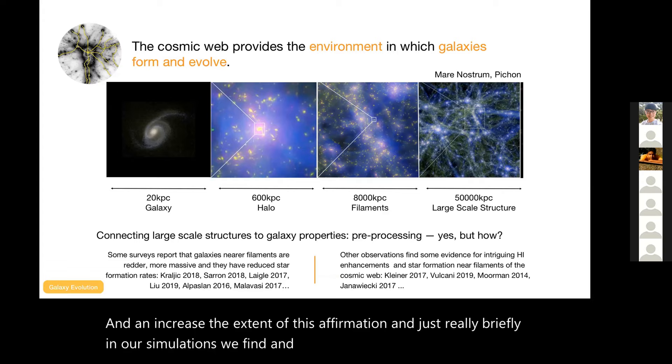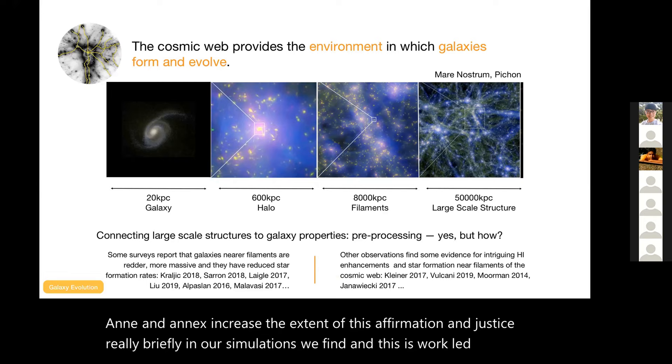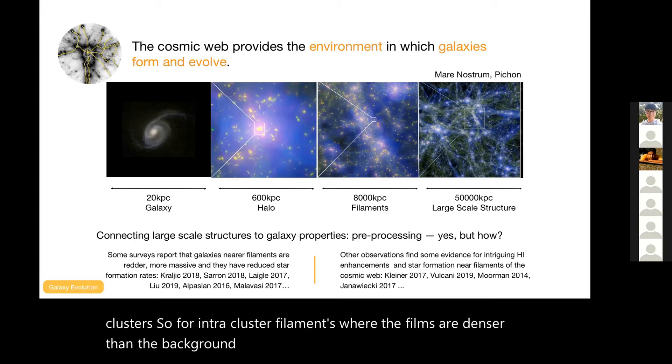Just really briefly in our simulations, and this is work led by Charlotte Welker, we find that this enhancement only happens inside clusters, so for intracluster filaments where the filaments are denser than the background, but not outside of clusters. So this whole controversy suggests that this multi-stream region of the large scale structure does have an effect, a secondary effect, and that galaxies accreted by clusters become affected before they enter the cluster.